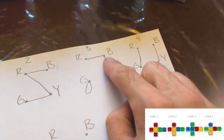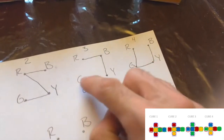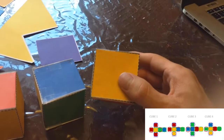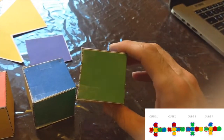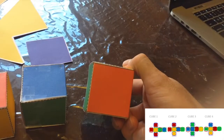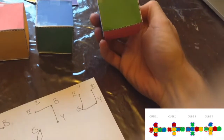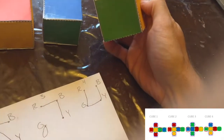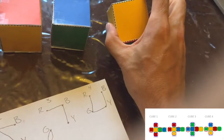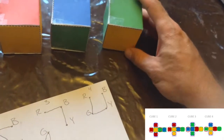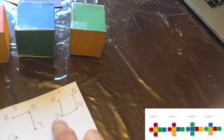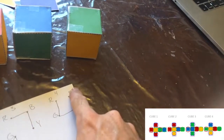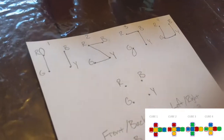Block three works out to red to blue, blue to yellow, and green to green. On the fourth block: yellow on the front, blue on the back, green on top, red on the bottom, green on one side and yellow on the other side. That gives us red to green, green to yellow, and yellow to blue.